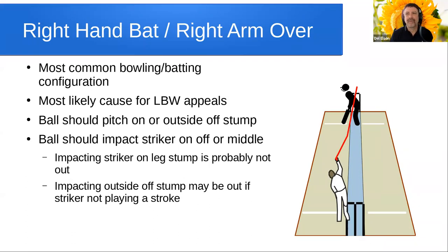Armed with that knowledge, let's look at some of the most common batting and bowling configurations. There's a lot to unpack here, so I'm going to go through this slide fairly quickly and then come back to it. A right-hand bat facing a right-arm bowler bowling over the wicket — this is of course the most common bowling and batting configuration, and it's the most likely cause for LBW or any other kind of appeal.